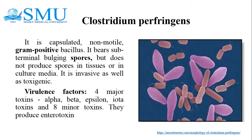Toxins of Clostridium perfringens show varied biological activity. Based on production of the four major toxins, Clostridium perfringens is classified into five types, A to E. Alpha toxin is lethal; beta toxin is lethal, necrotizing, and trypsin-labile; epsilon toxin is lethal and trypsin-activable; iota toxin is dermonecrotic and binary with two fragments. Minor toxins include gamma, delta, lambda, kappa, zeta, eta, mu, nu, neuraminidase, and enterotoxin.